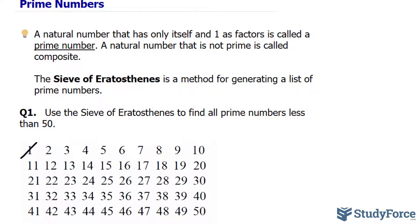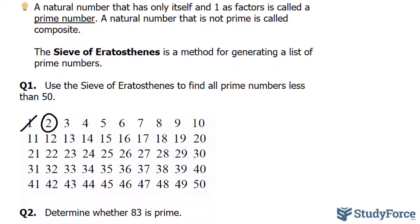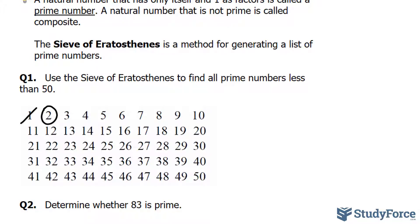We know that 2 is a prime number, so circle it and cross out every multiple of 2, because every multiple of 2 is a composite number.